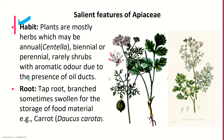Coming to corolla: petals are 5, polypetalous, epigynous, and the tips are inflexed — please note that the tips of the petals are inflexed. Estivation is valvate or imbricate and they are coloured. In Coriandrum, the petals are equally keeled in central flowers and unequally keeled in zygomorphic flowers.